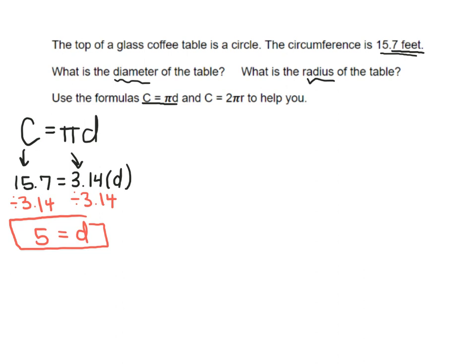So, long story short, anytime we want to find the diameter when given circumference, we can take circumference and divide it by π to equal diameter.